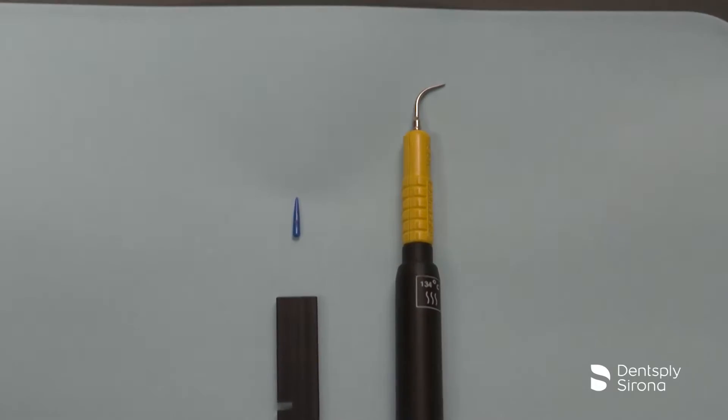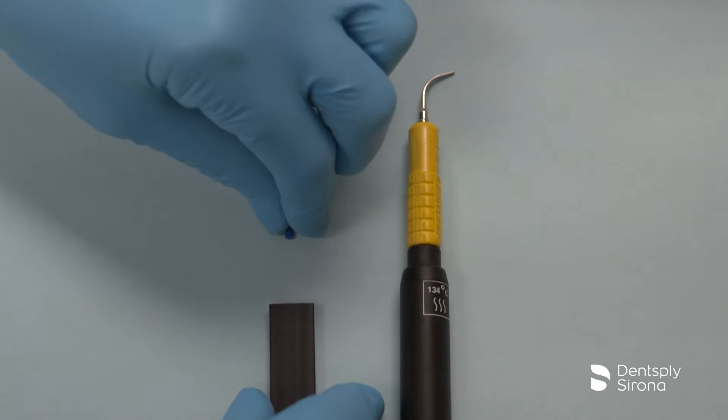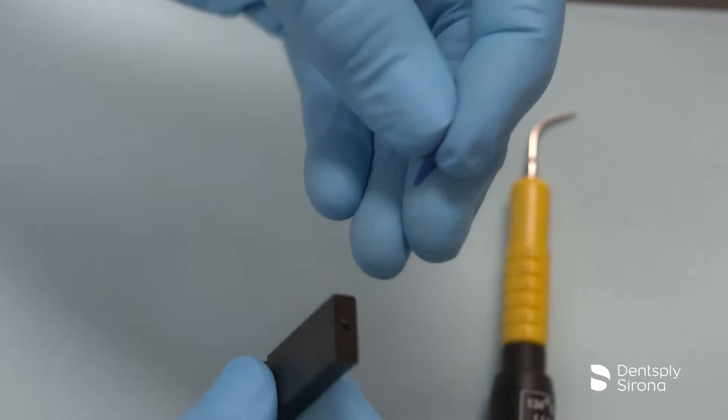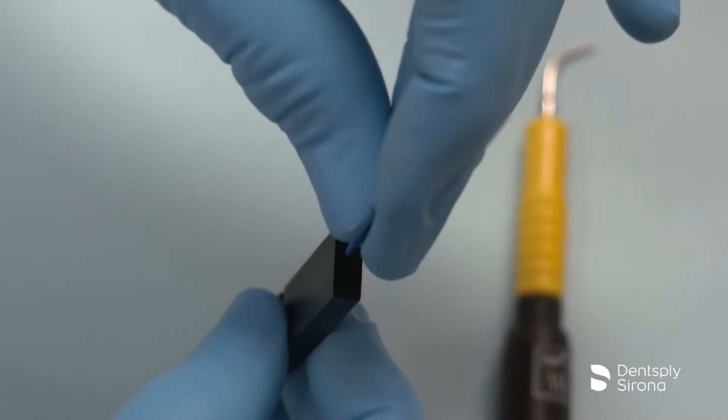To prepare the Cavitron Ultrasonic Implant Insert for use, take a new plastic Soft-Tip Disposable Profi-Tip and place it point first into the hole in the end of the wrench.